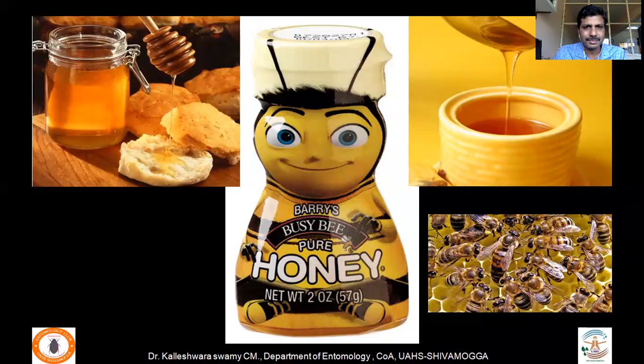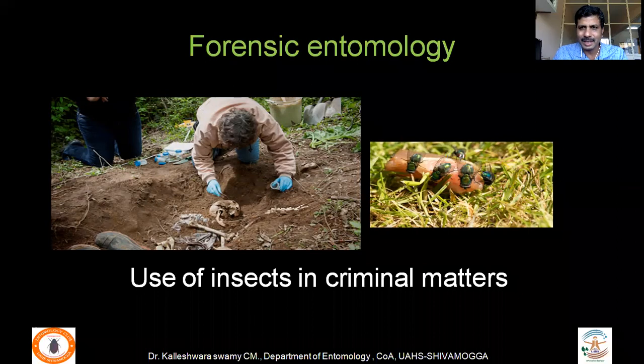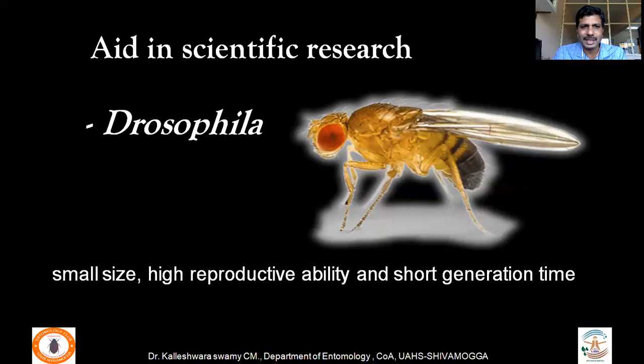Insects have also been exploited in criminal matters through forensic entomology. When a murder or death occurs, the first organisms to feed on wounds are insects, providing important clues such as time of death and blood group. Additionally, insects like Drosophila have been exploited in scientific research because of their small size, high reproductive ability, and short generation time — gene alterations are expressed quickly, helping scientists understand biological principles.